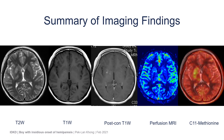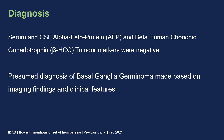In summary, the imaging findings included T2, T1, post-contrast, and perfusion MRI showing no differential perfusion between sides, and the methionine PET showing uptake in the lentiform nucleus — highly suggestive of a tumor. Lab tests showed no elevation of serum and CSF tumor markers, namely alpha-fetoprotein and beta-HCG. The presumed diagnosis of basal ganglia germinoma was made based on imaging findings and clinical features.